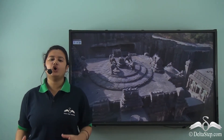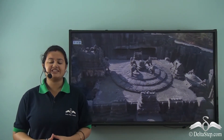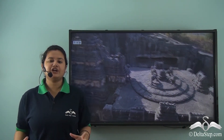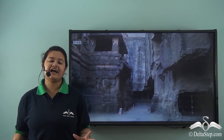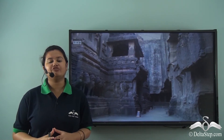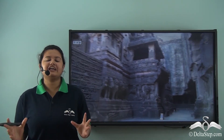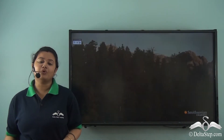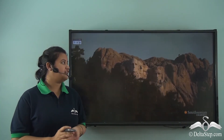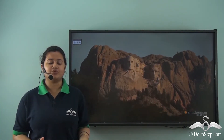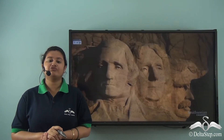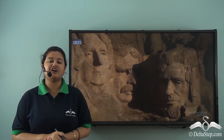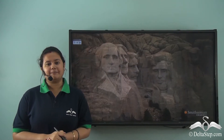Here we have a video on Ellora Caves. The speciality of this monument is that it has been built of a single rock. This form of architecture is called monolithic art. Next we have Mount Rushmore. The figures of four notable American presidents have been carved on this rock — this is a tribute to them.